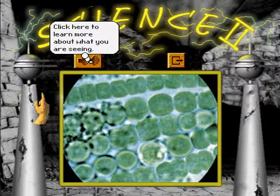Blue-green algae are among Earth's earliest life forms. Although they are primitive single-celled creatures, they might well be our distant ancestors.